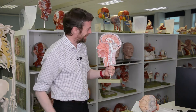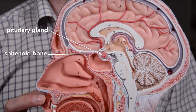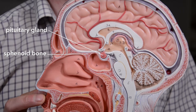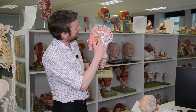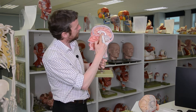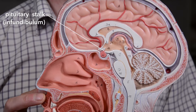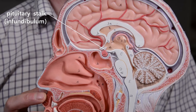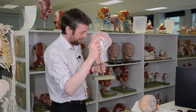Here on the model: the pituitary gland sits in the sphenoid bone, the thalamus is here, and this is the hypothalamus. The infundibulum — the pituitary stalk — links the hypothalamus to the pituitary gland.